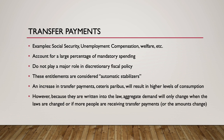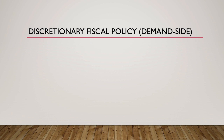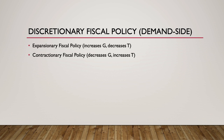Fiscal policy is further categorized as either expansionary fiscal policy or contractionary fiscal policy. Expansionary fiscal policy involves increasing government spending or decreasing taxes, or some combination of both, to increase aggregate demand. Contractionary fiscal policy involves decreasing government spending or increasing taxes, or some combination of both, to decrease aggregate demand.